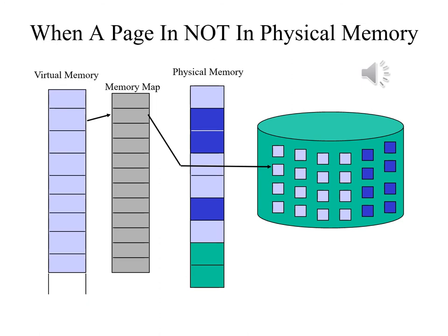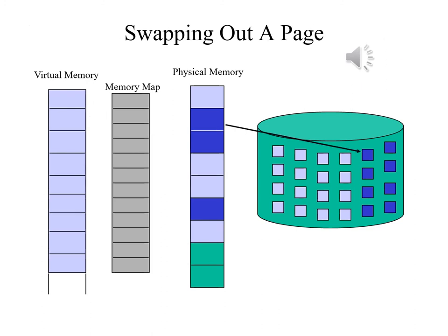If the page is not in memory, the memory map will indicate that, meaning we will have to look for it in Backing Store. In some cases there will be available frames of memory into which we can load the page. If not, we have to swap one page out of memory, writing its contents to Backing Store. In some cases this may not be necessary — if we did not change anything in that page, the version on Backing Store may still be an accurate reflection of its contents. If not, this step is crucial to maintaining the integrity of the process. How we choose this page is something we will discuss at length in a little while.